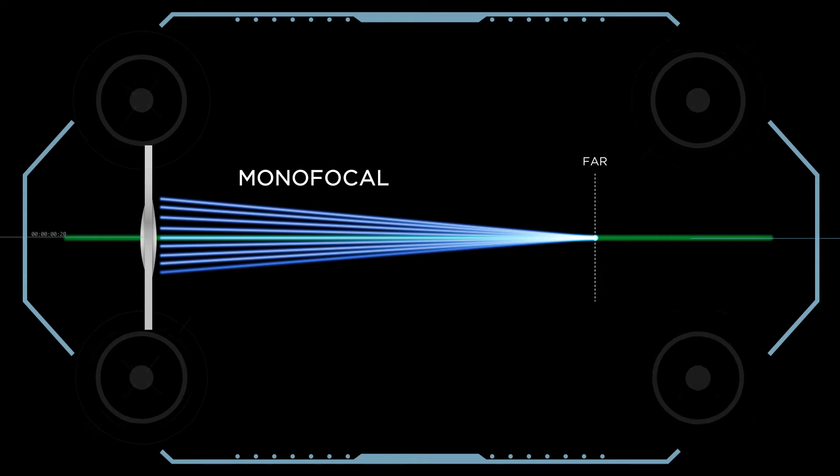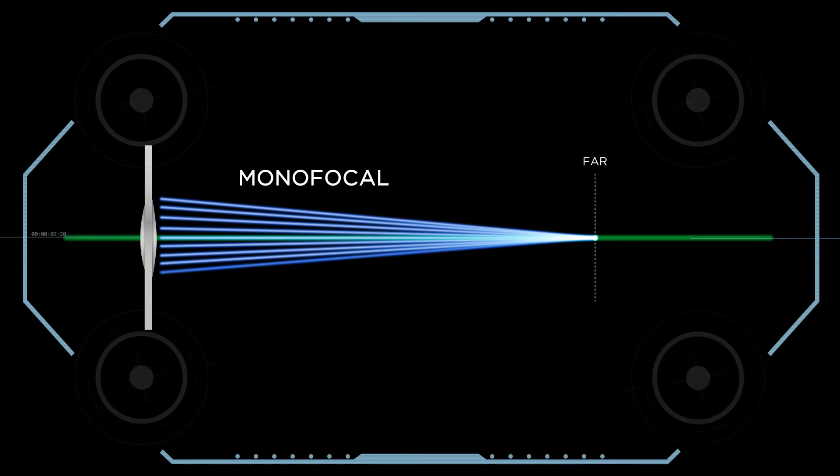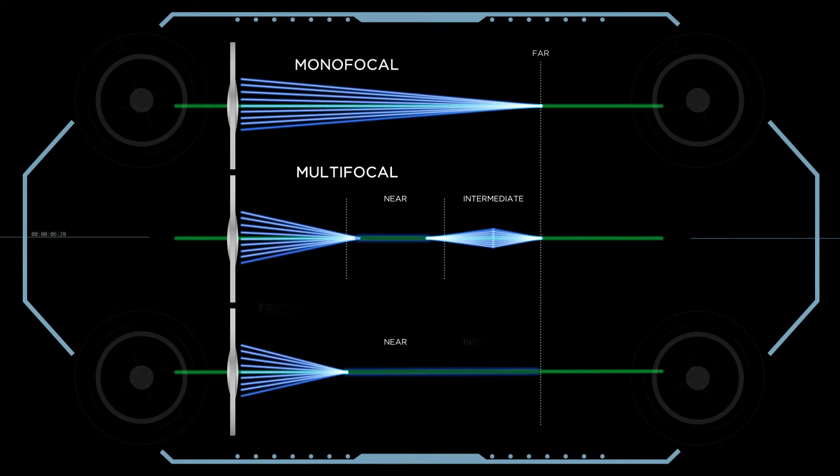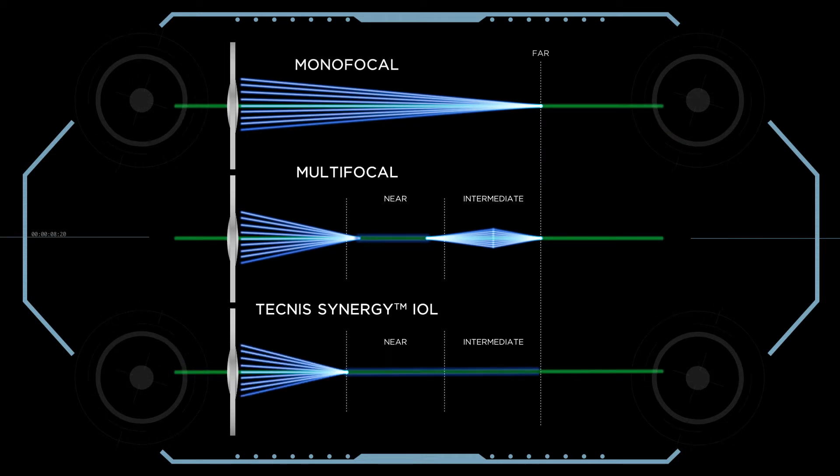Laboratory testing using an average cornea eye model to visualize light passing through the lens demonstrates the visual performance of the Technis Synergy IOL. The Technis Synergy IOL produces light focused continuously through the range of vision.